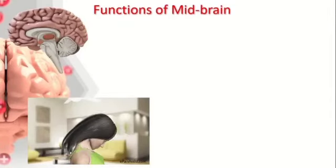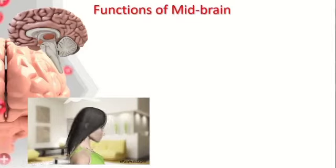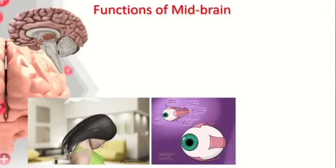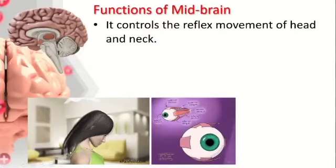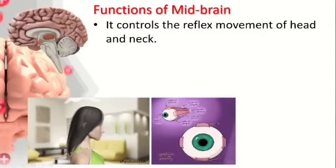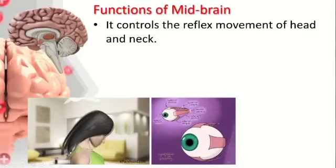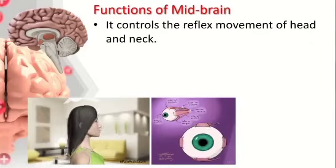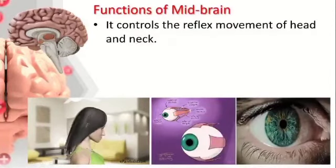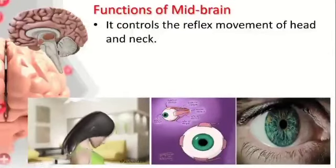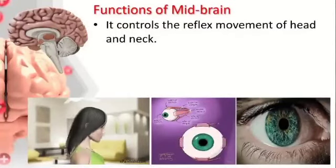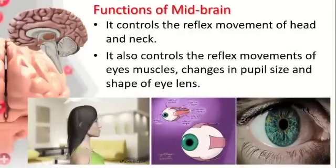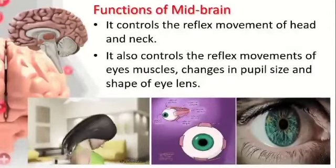Now let us move on to the midbrain. The midbrain controls the reflex movement of the head and neck. The left, right, up, and down movement of the eye muscles is also controlled by the midbrain. The size of the pupil — reducing and increasing — is also controlled by the midbrain.